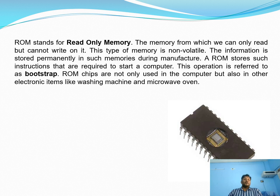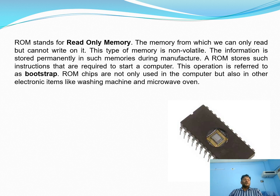Characteristics of Dynamic RAM: data has a short lifetime, needs to be refreshed continuously, slower compared to static RAM, used as main RAM, smaller in size, less expensive, and less power consumption. Next we see about ROM — Read Only Memory. ROM is the memory from which we can only read but cannot write. This type of memory is non-volatile. The information is stored permanently during manufacture. ROM stores instructions required to start the computer; this operation is referred to as the bootstrap or BIOS boot program.